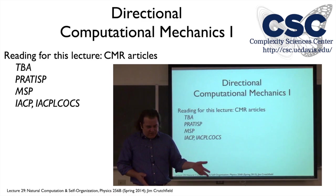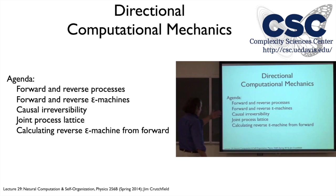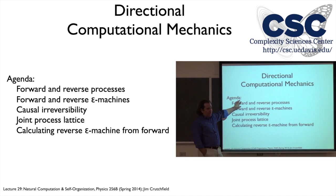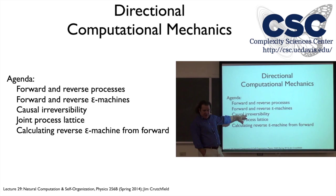We needed last week's results on mixed states to work with this. The agenda is to review and set up the notation more carefully than we did a couple weeks ago: forward and reverse processes, what we mean mostly notational, but also reviewing what information statistics are symmetric and asymmetric when you scan a process in different directions. Then we're going to introduce forward and reverse epsilon machines corresponding to those two different scans.